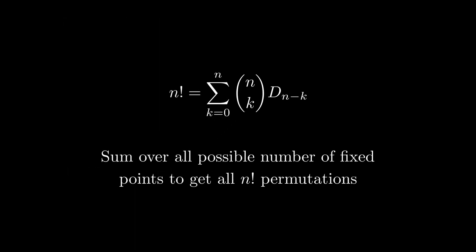Immediately we see that if we sum over all k, we're counting up permutations with any number of fixed points. That is, all permutations. So the sum of n choose k times d sub n minus k is n factorial. Nice.